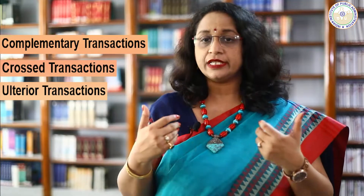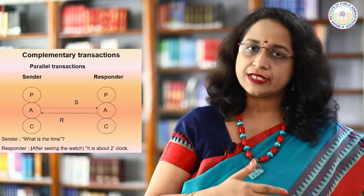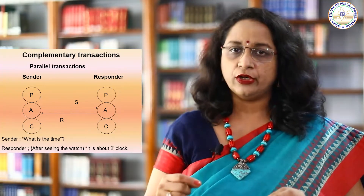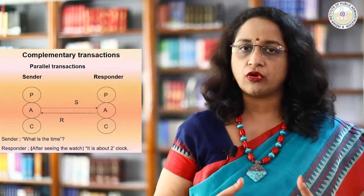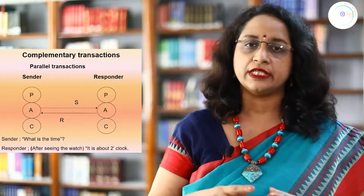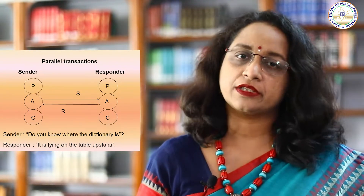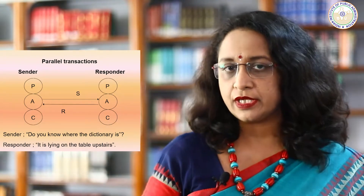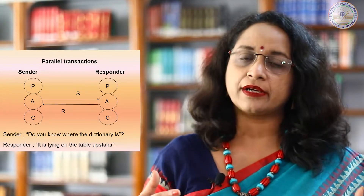Transaction analysis helps in understanding these transactions and responding to them appropriately. A transaction is said to be complementary when the person sending the message gets the predicted response from the other person — that is, the stimulus and response patterns from one ego state to another are parallel. For example, if a person asks what is the time — a message from adult to adult ego state — and the responder answers it's about two o'clock, it is a complementary transaction because the lines of transaction are parallel. Another example: a person asks do you know where the dictionary is, and the responder says it's lying on the table upstairs — again an example of complementary transaction.